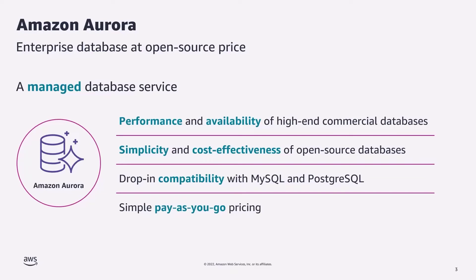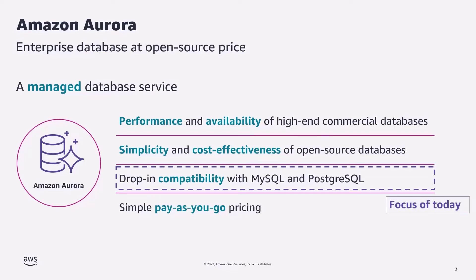Amazon Aurora is compatible with two open-source database engines: you can choose either MySQL or PostgreSQL. This means that the code you wrote for either of these databases will continue to work with Amazon Aurora without making any changes or changing your drivers. All of this comes with AWS's simple pay-as-you-go pricing. Our focus today is Amazon Aurora's MySQL compatibility.